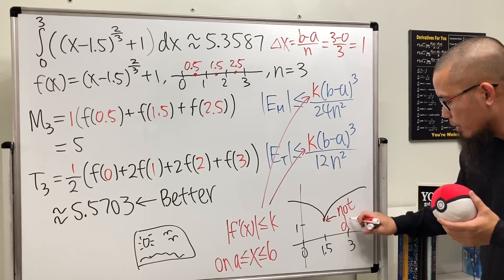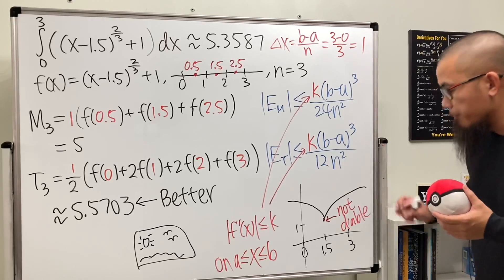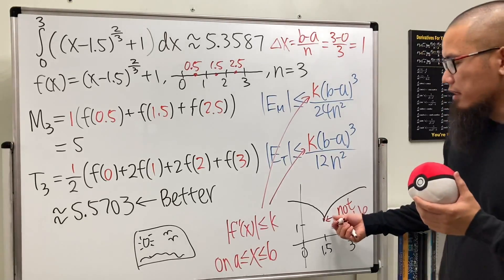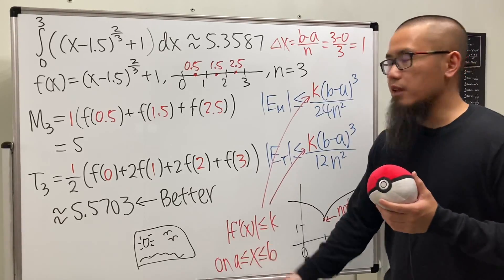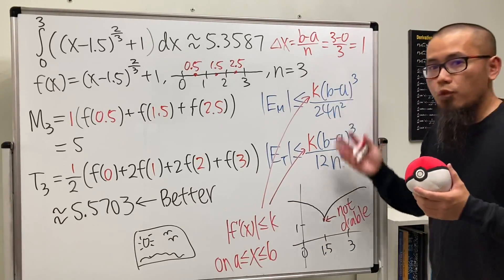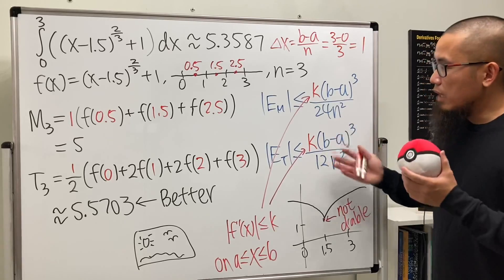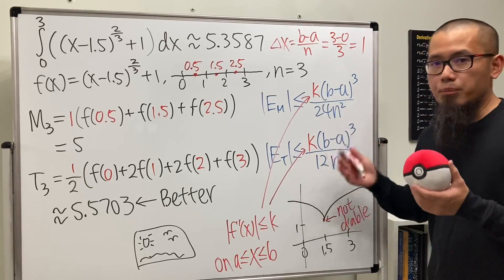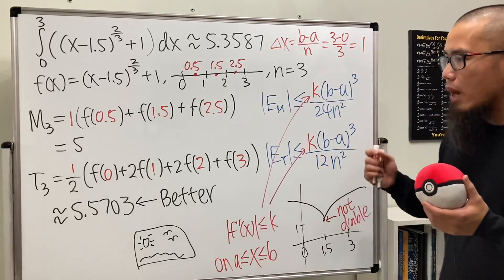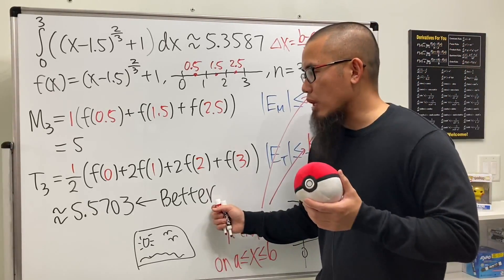This right here is not differentiable. The first derivative doesn't exist—don't even think about the second one. If we don't have the second derivative, let me tell you, these error bound formulas don't hold anymore. They cannot promise anything.